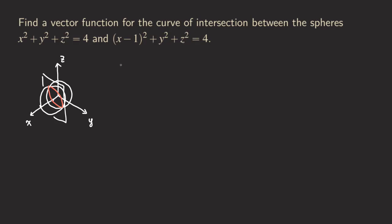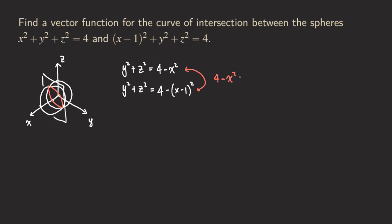So first we are going to manipulate the first equation to get Y squared plus Z squared equals four minus X squared — we're isolating Y squared plus Z squared by moving X squared to the right side. Then we do the same thing for the second equation, so we get Y squared plus Z squared equals four minus (X minus one) squared. Because both equations have the same left-hand side, we can set the right-hand sides equal to each other: four minus X squared equals four minus (X minus one) squared.